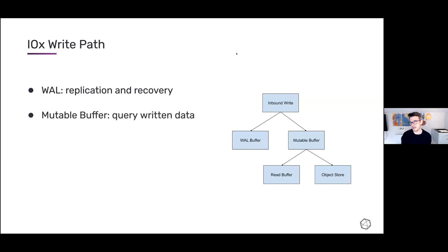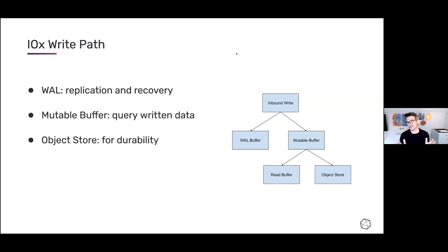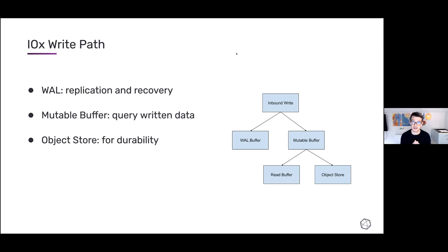At some point, we can't keep all of this data in the mutable buffer — we need to think about durability and getting it into a more read-optimized format. At some point, the IOx server will move data out of the mutable buffer, put it into object store as a persistence and durability layer, and also put some or all of it into the read buffer. When we put it into the read buffer, we're essentially saying this is now an immutable thing that we're going to optimize the layout and format of to make it very fast for read workloads.